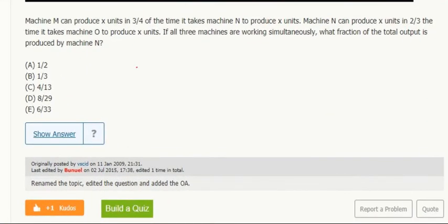So M can produce X units in three-quarters of the time of N, and N is two-thirds of O. Everything goes back to O, so I'm going to start there. They're each doing X units. I'm using O's time as the standard because then N is two-thirds of that, then M is three-quarters of two-thirds of that time.